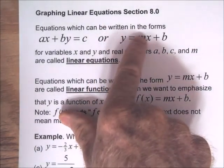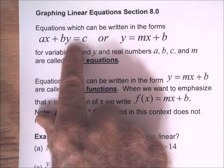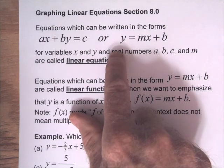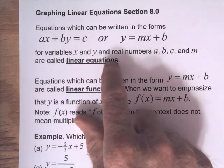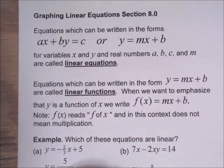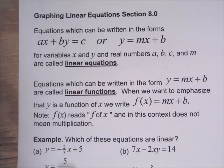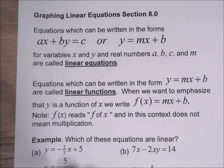Equations can be written in the form AX plus BY equals C, or Y equals MX plus B, are called linear equations. X and Y would be the variables. A, B, C, and M are real numbers.